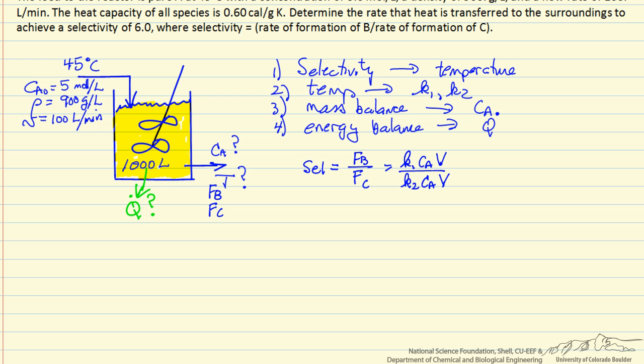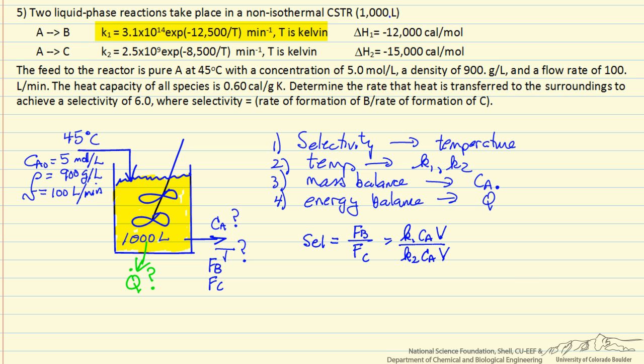And how fast we're producing B is the rate constant for this first reaction times the concentration, since it's first order, times the volume of the reactor. We know it's first order because of the units for the rate constant. And likewise for the molar flow rate of C.